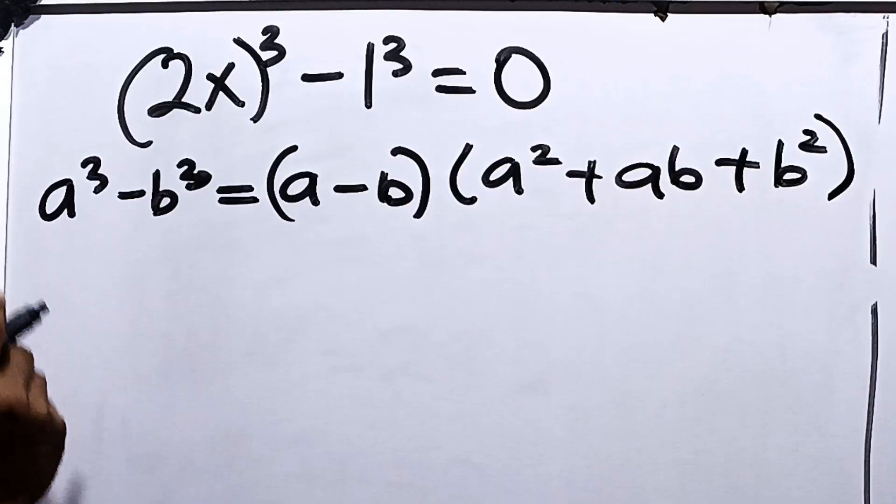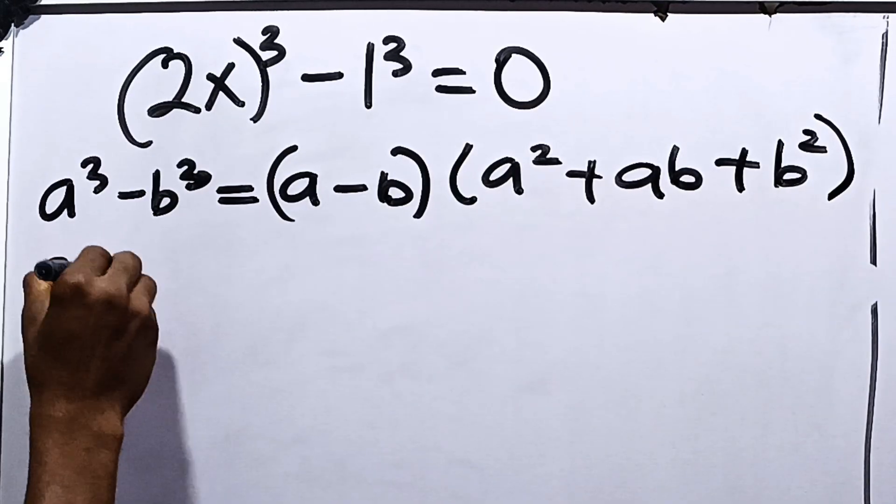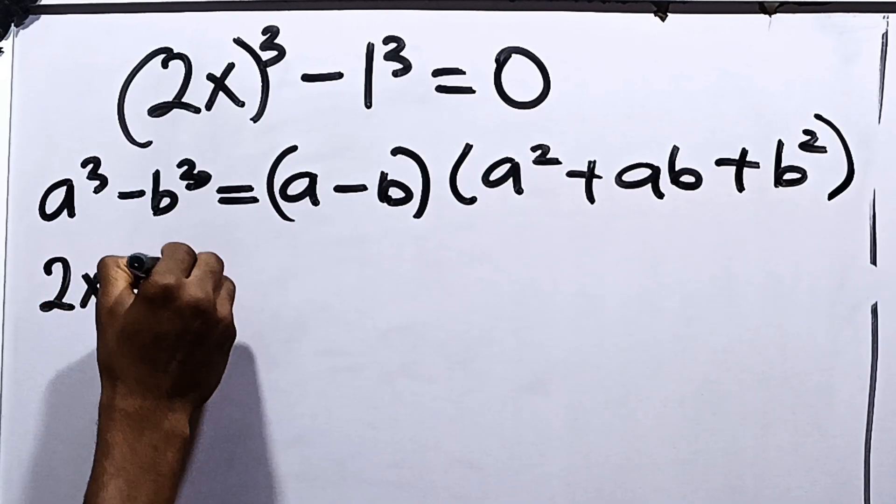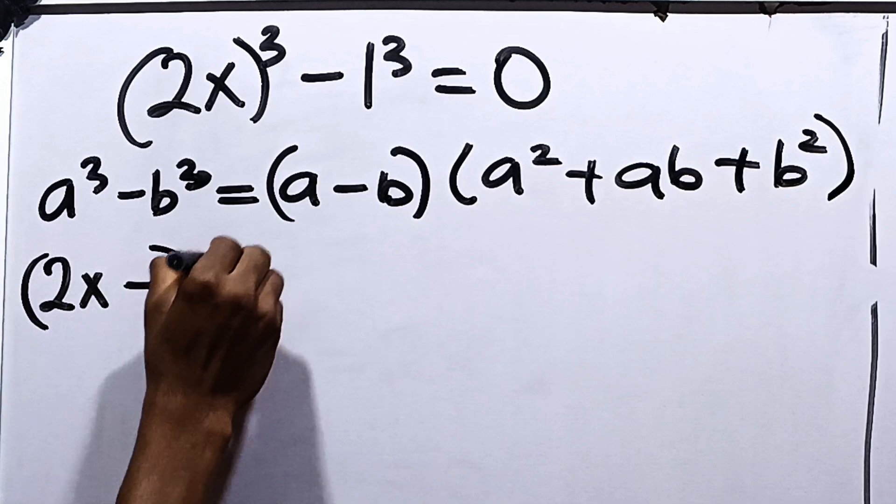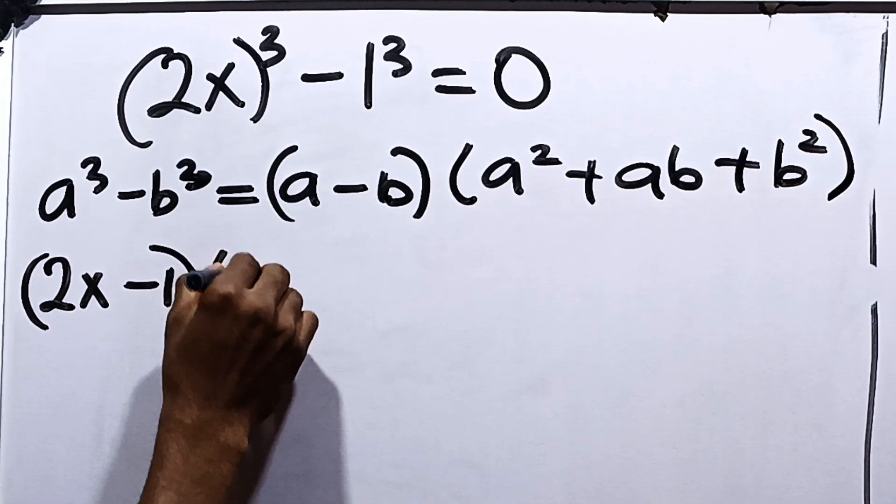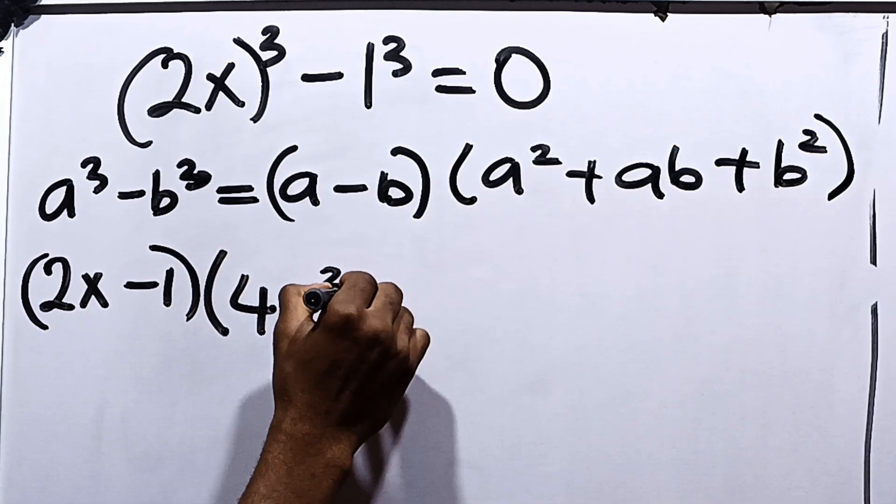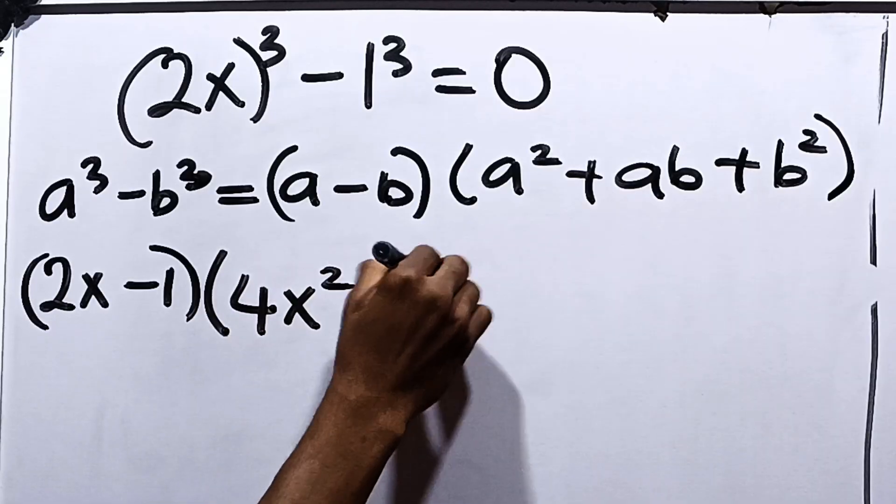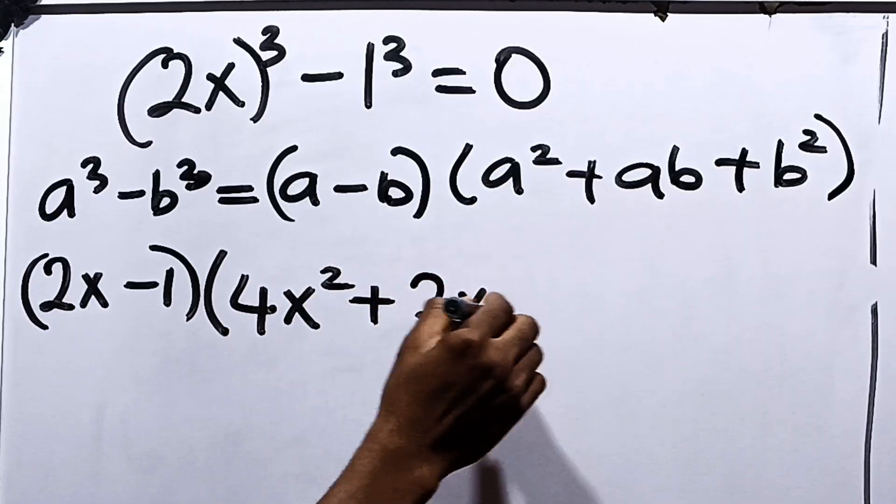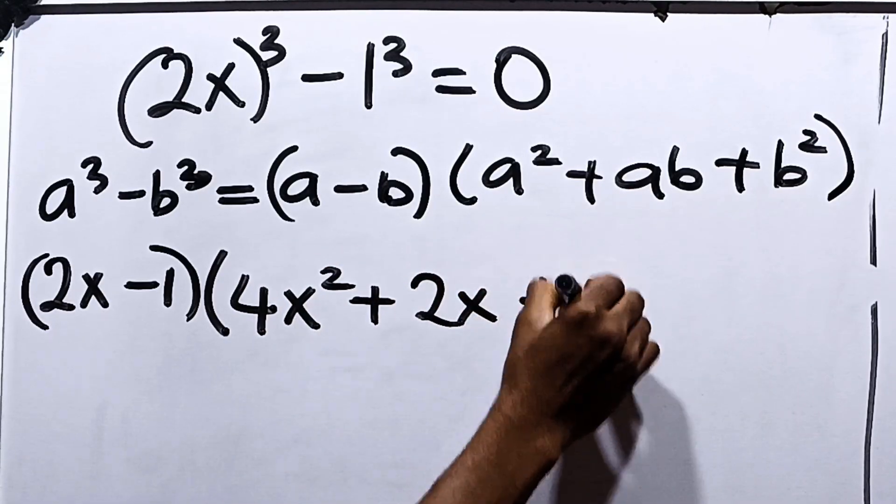Applying this law here, we now have that this is 2x minus 1 multiplied by 2x squared is 4x squared, plus 2x times 1 is 2x, plus 1 squared is 1.